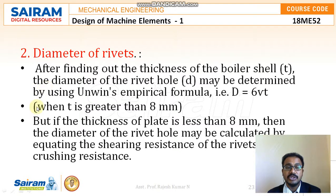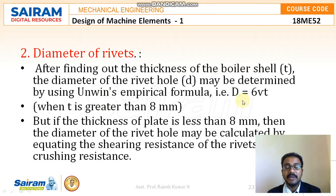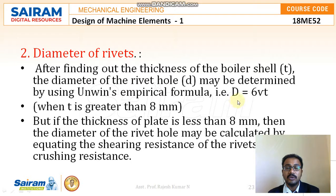The second design step is finding the diameter of the rivets. After determining the thickness of the boiler shell for the longitudinal design, the diameter of the rivet hole may be determined using Unwin's empirical formula: D = 6√t. This formula applies when the thickness is greater than 8 mm. If the thickness is less than 8 mm, the design is not recommended as it will ultimately result in failure. Generally, we proceed with a thickness greater than 7 mm, but technically 8 mm is required. Using this thickness value with Unwin's empirical formula, we find the diameter of the rivet hole.